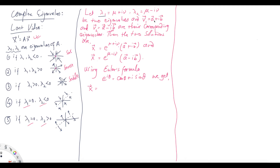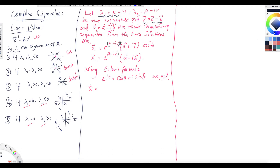In that case, the eigenvector will be in a plus ib format, where a and b are vectors. And v2 is a minus ib — the corresponding eigenvectors. When lambda 1 and v1 are the eigenvalue and eigenvector, the solution is x = e^(lambda·t) · v1 = e^(lambda·t)(a + ib). Similarly for lambda 2: x = e^(lambda2·t)(a − ib).